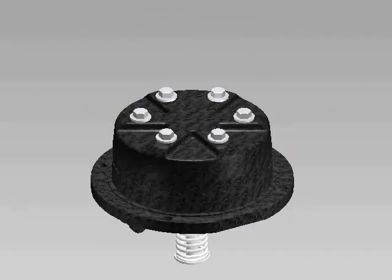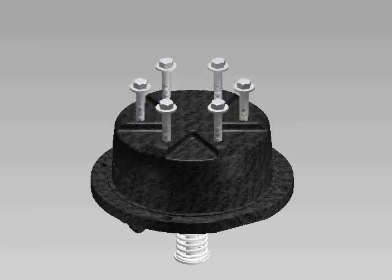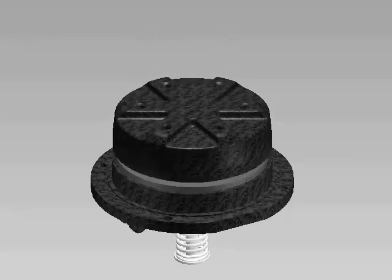Always service the checks one at a time to avoid mixing parts. Both checks can be repaired following the same procedure. You will want to remove the bolts from the seal retainer on the check, then remove the retainer.